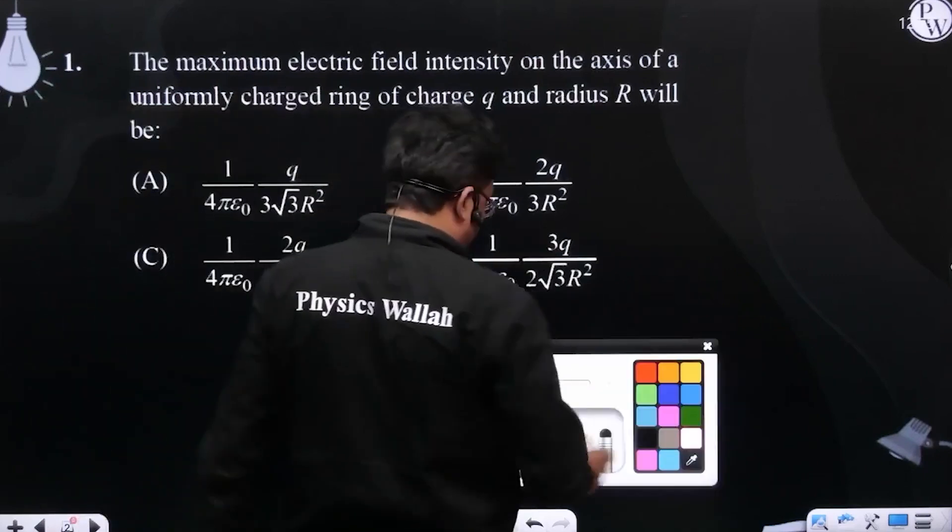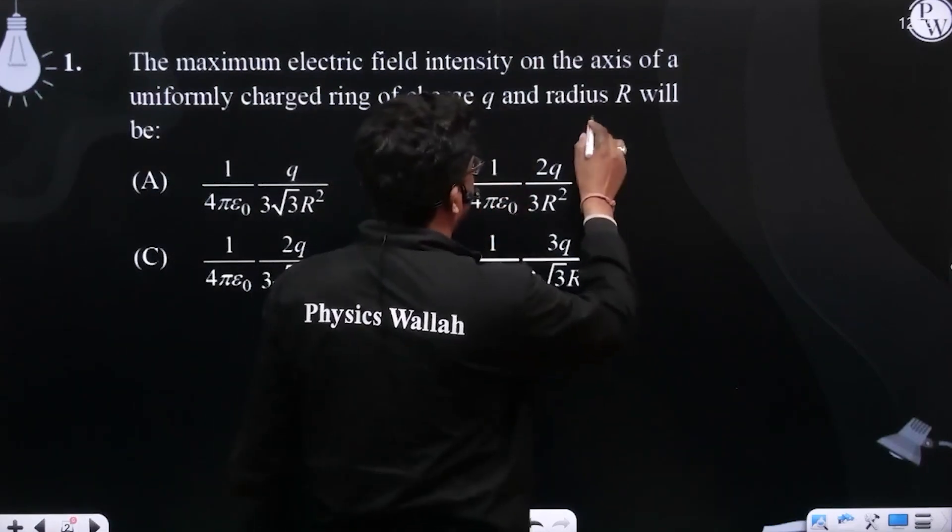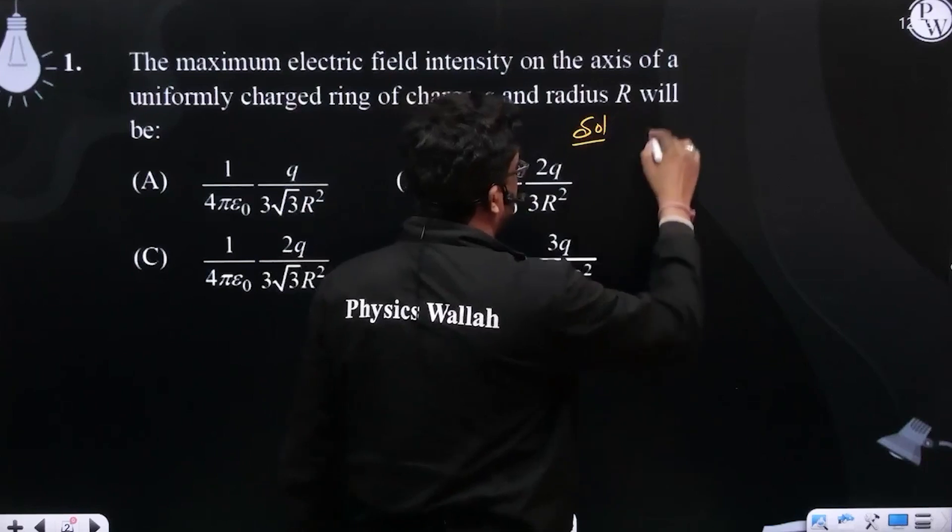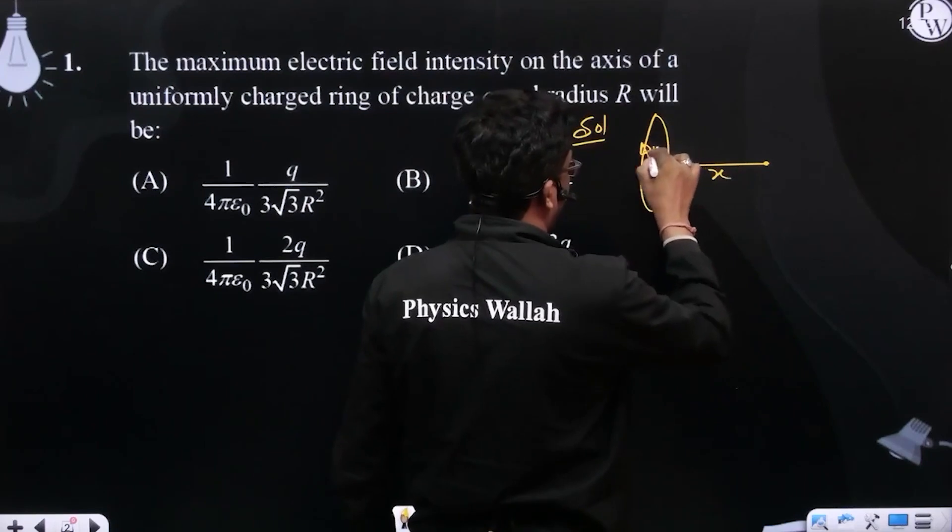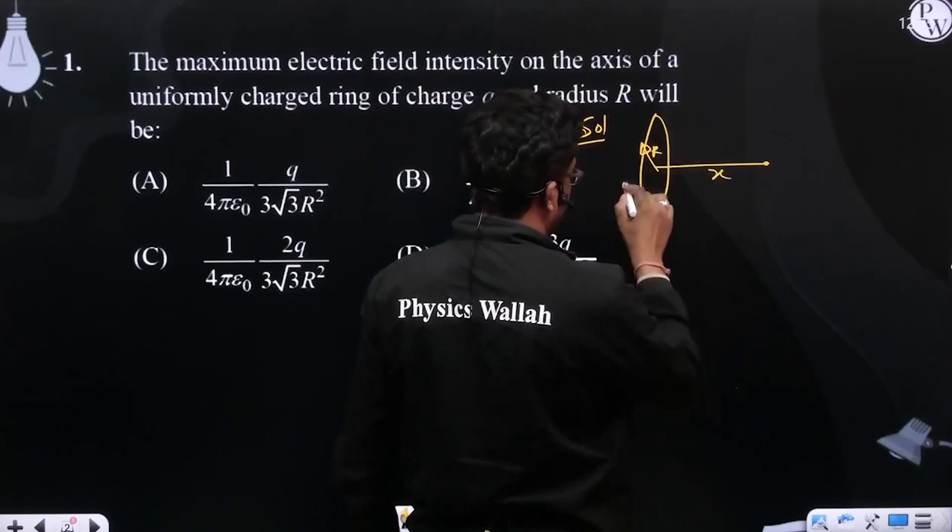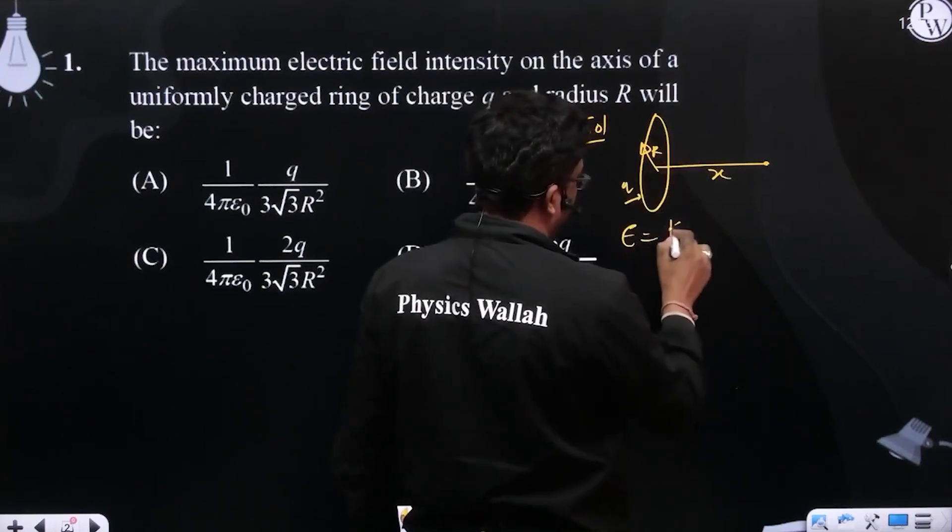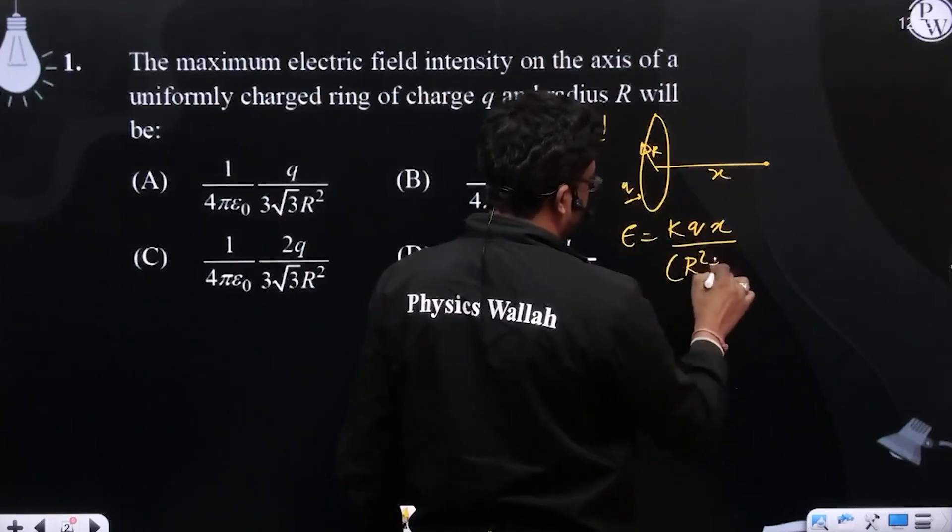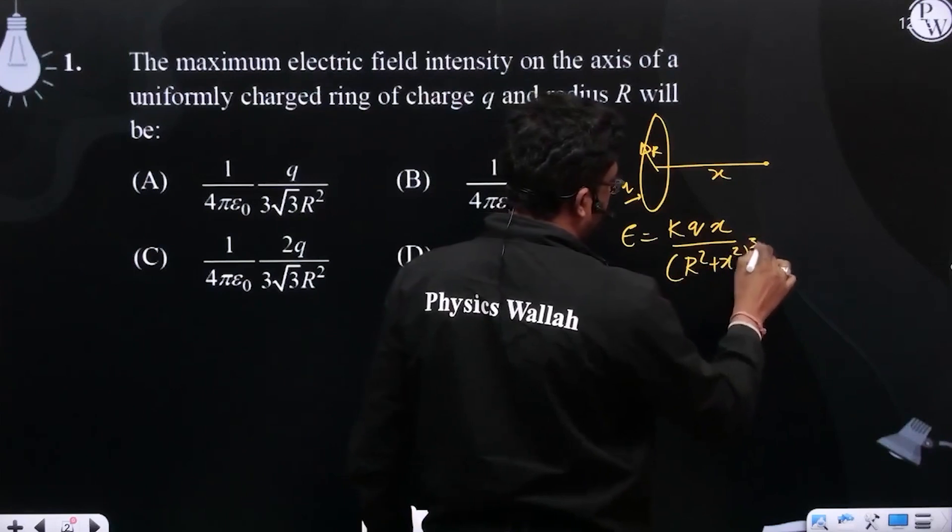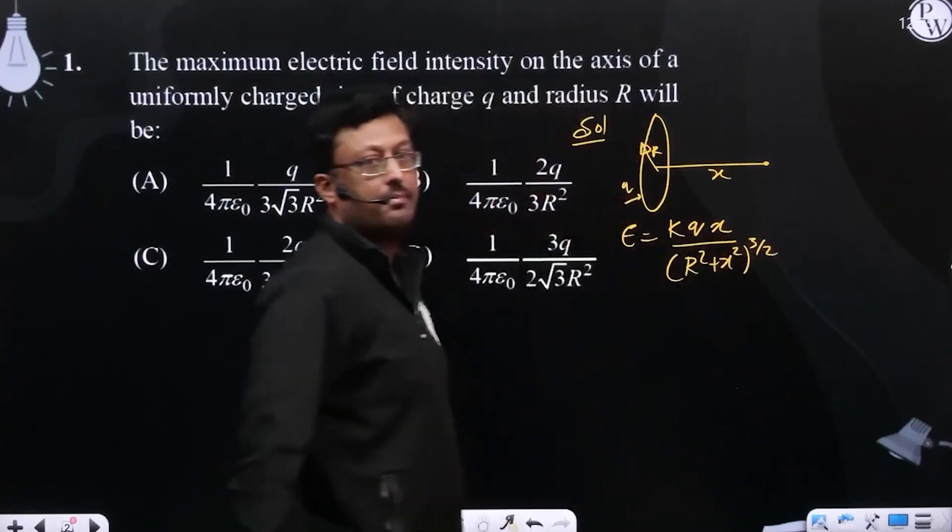So we all know that maximum electric field due to a charged ring at some distance x is given by kq x upon r square plus x square to the power 3 by 2. This is its magnitude.